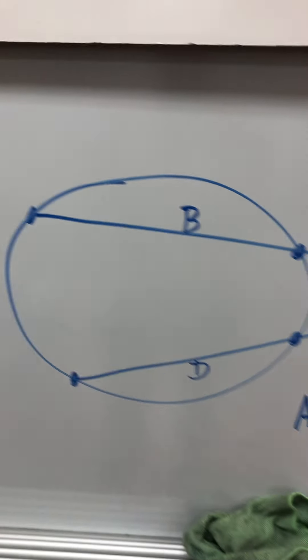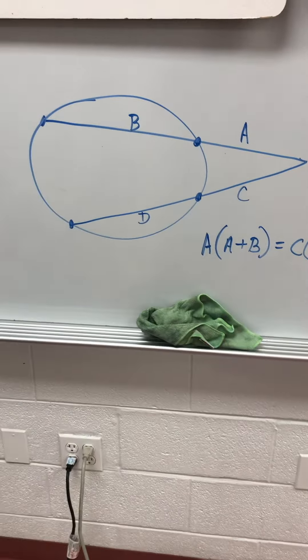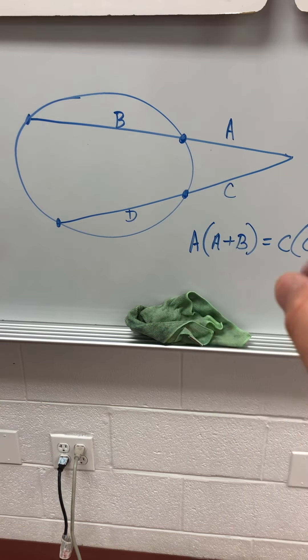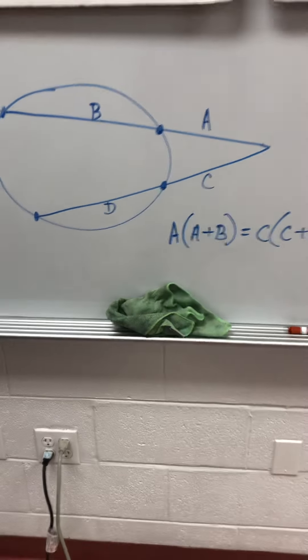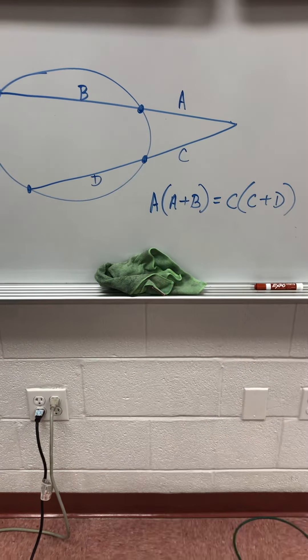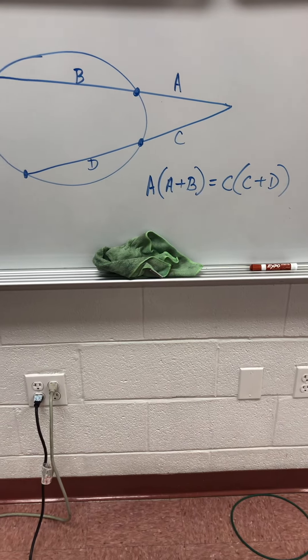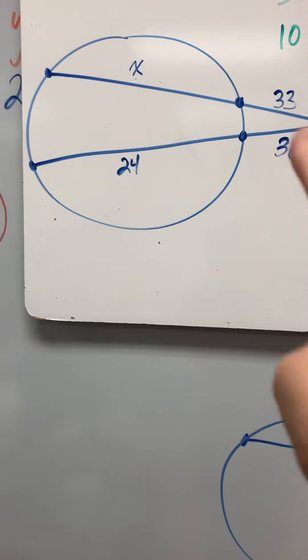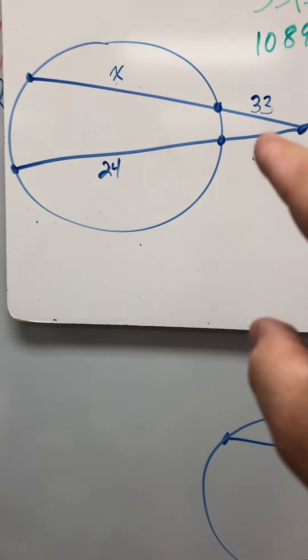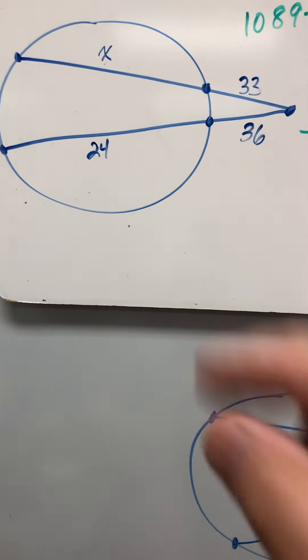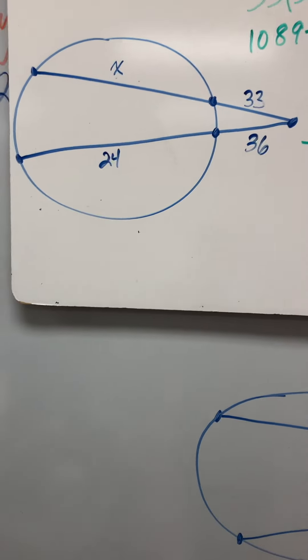For example, looking here, this segment if you do A times A plus B, that will equal C times C plus B every time. So looking at these big numbers here, we're going to do 33 times 33 plus X equals 36 times 36 plus 24.